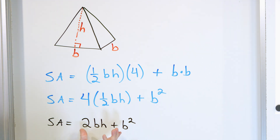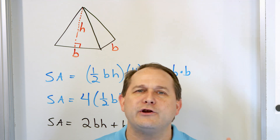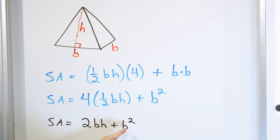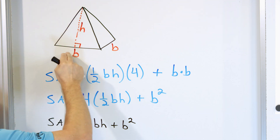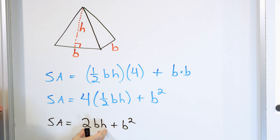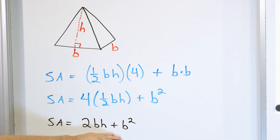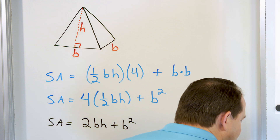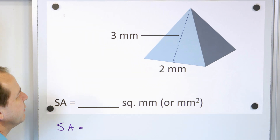The problem with this equation is it hides what you're doing. You see 2BH and wonder why — maybe you didn't know where it came from. And why is it B squared? By going through the process, you can see it's one-half base times height — the area of one triangle — times four. And then B times B gives you B squared for the base. I want you to see where the equation comes from, but ultimately we won't just plug into it. Let's calculate the surface area and see how we'd really do it.